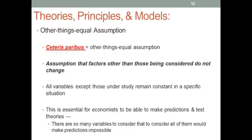Something I really want you to keep in mind — this is called the other things equal assumption. In Latin: ceteris paribus — other things equal assumption. Economists must assume that factors other than those being considered do not change. All variables except the specific one or two that the economist is studying must remain constant. It's essential for economists to do this because they can't make predictions without it. There are so many variables that if you try to think about all of them at the exact same time, it would be impossible to make predictions. So you have to isolate what you're trying to study and assume that other things remain constant.